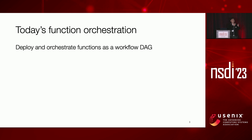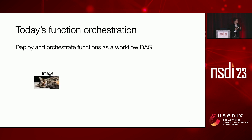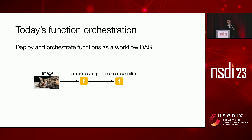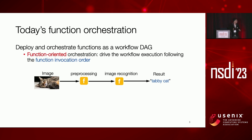For example, the nodes of the DAG represent the functions and edges represent their invocation dependencies. Let's take an example of the image processing workflow. Assuming you have an input image, you will first trigger the preprocessing function, and the output will then be sent to an image representation function to get the final results. The platform simply drives the workflow execution following the function invocation order in the workflow DAG. This approach is effective for simple cases like this.